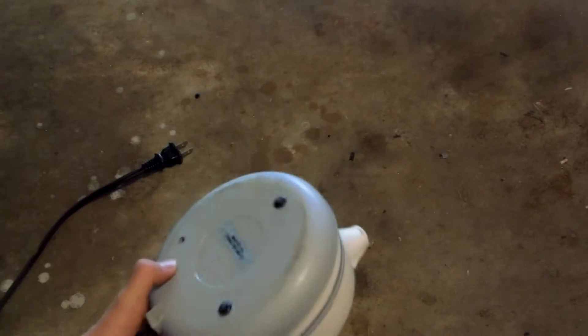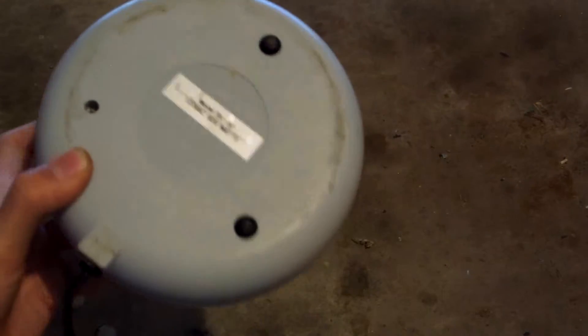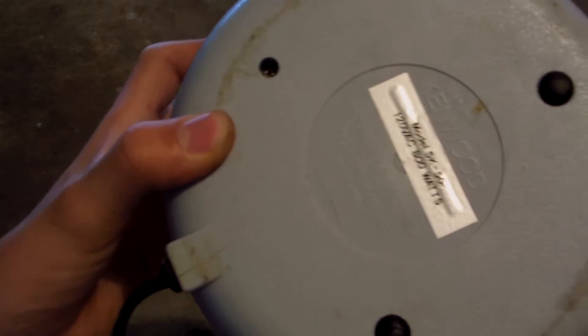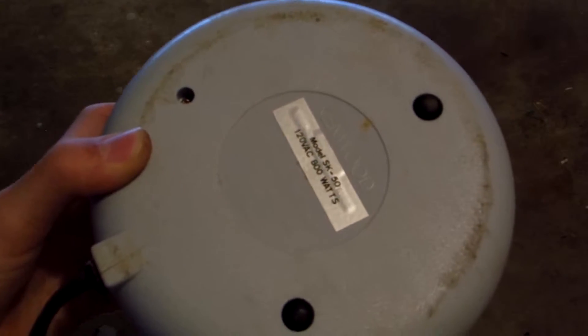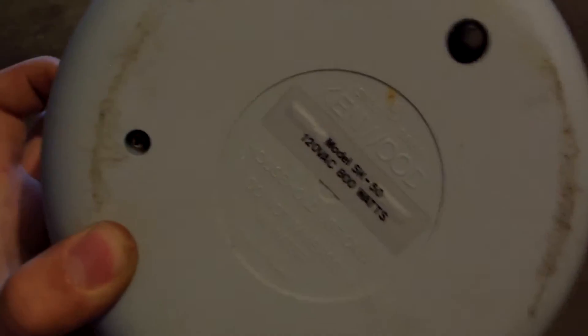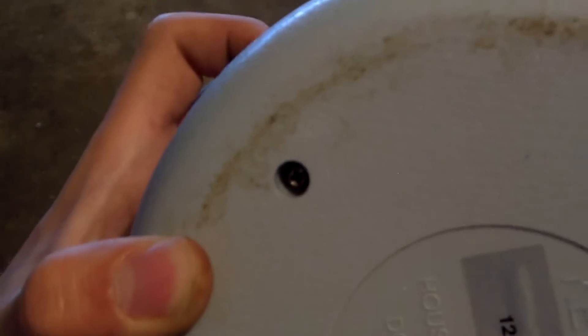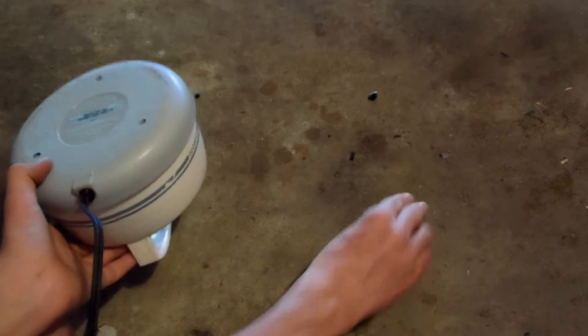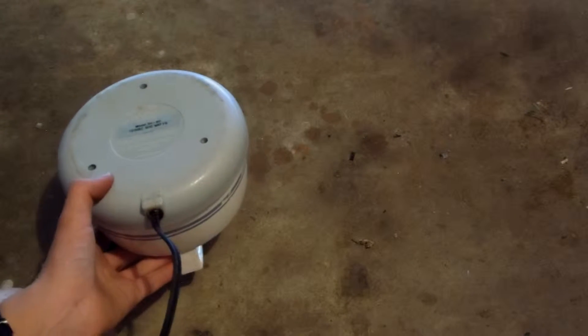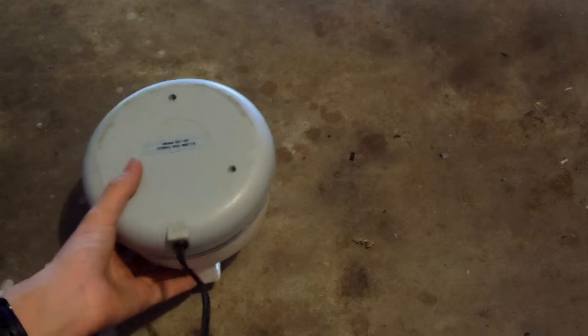Fortunately there's no pesky tamper-proof bits. It looks like all these can be removed. I've already removed one of the little bumpers, little feet that keep this from getting scratches at the bottom. And as you can tell, it's just an ordinary Phillips head screw. So you can pop all these off, the little rubber feet, and just go at it with your screwdriver.